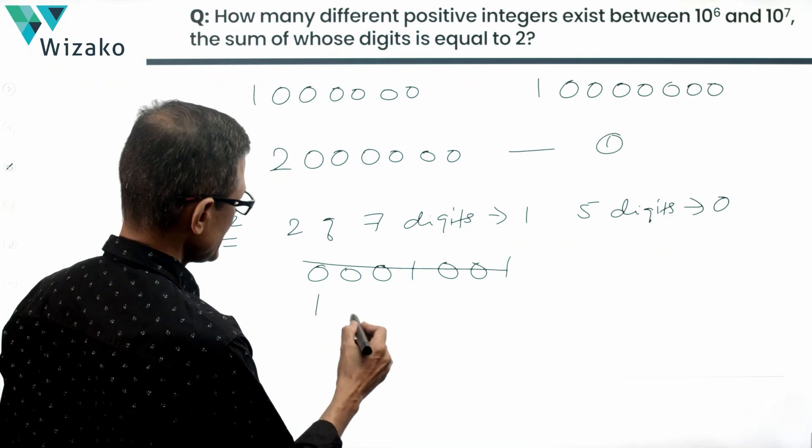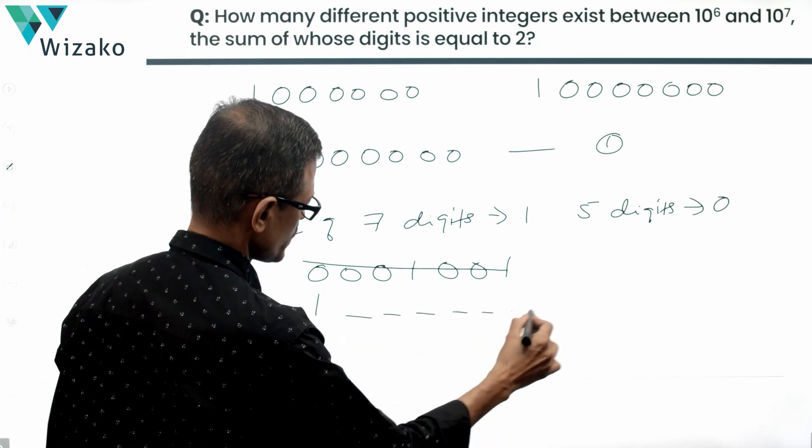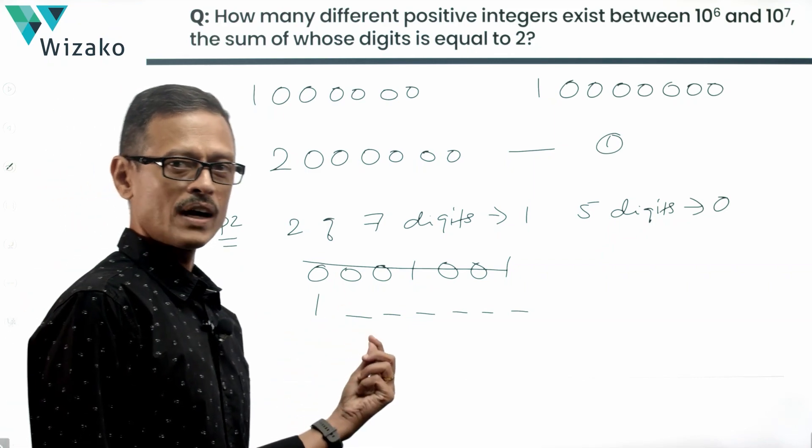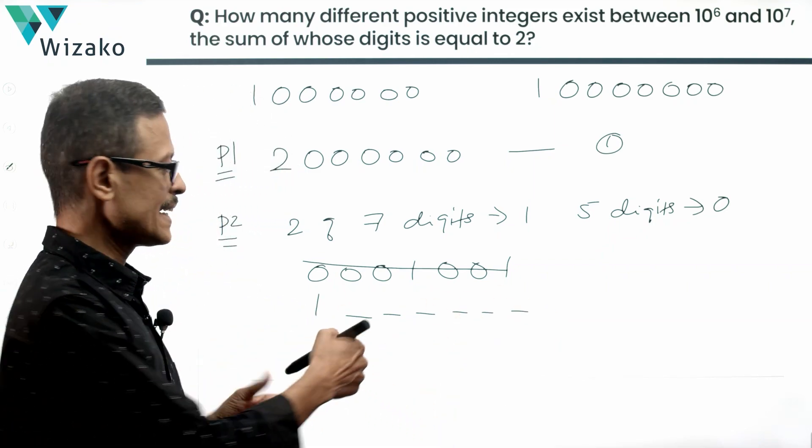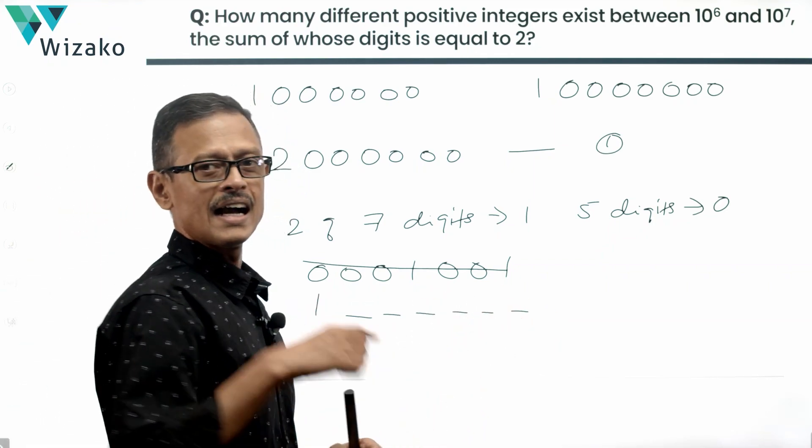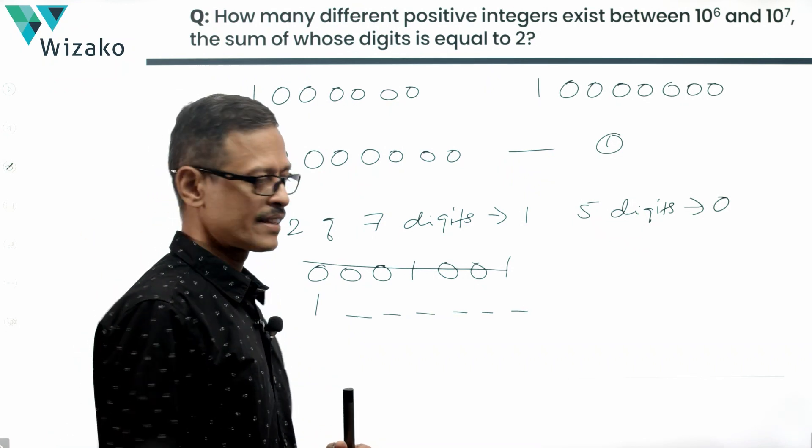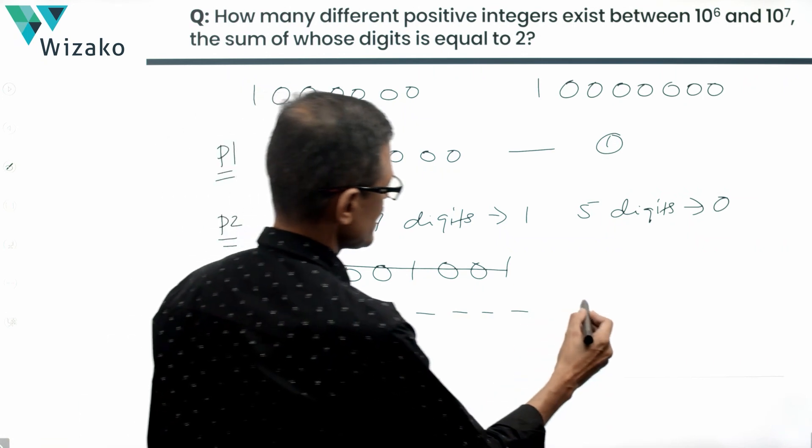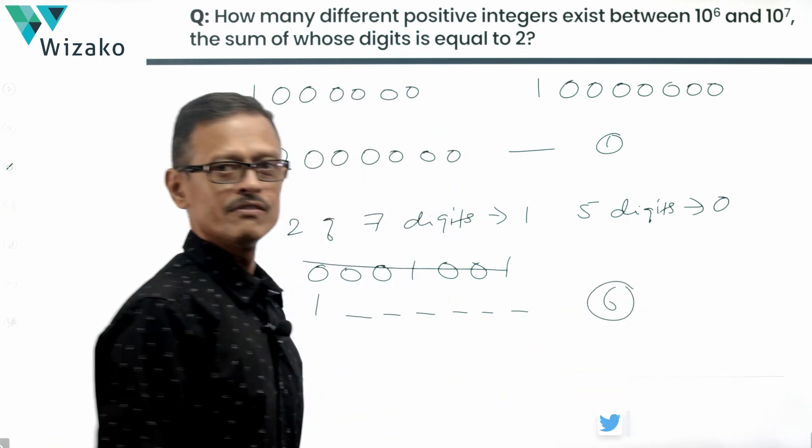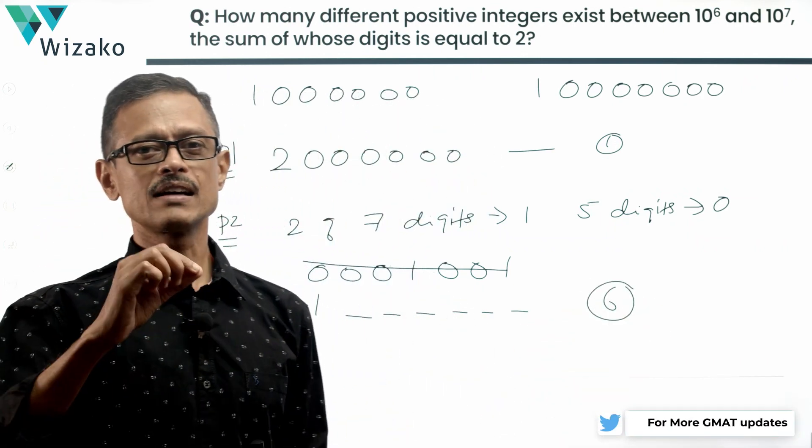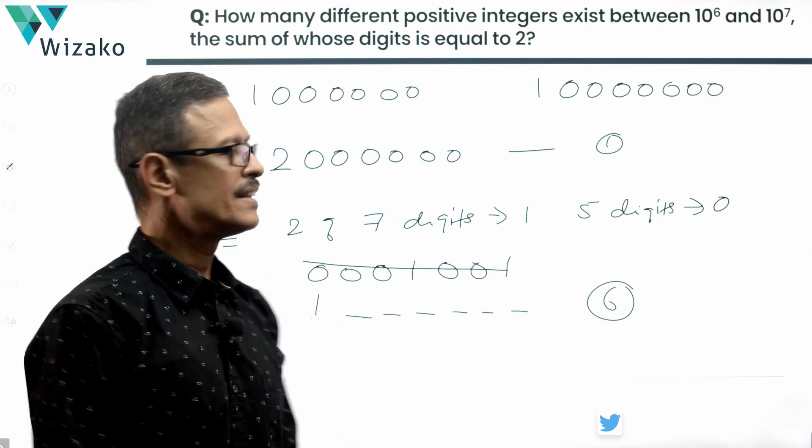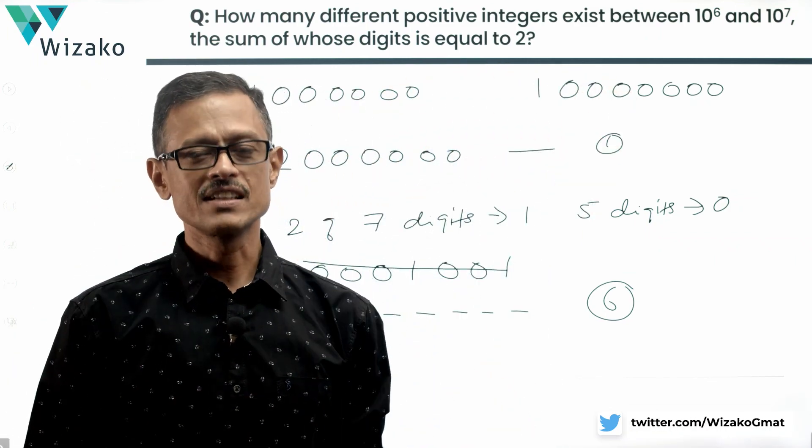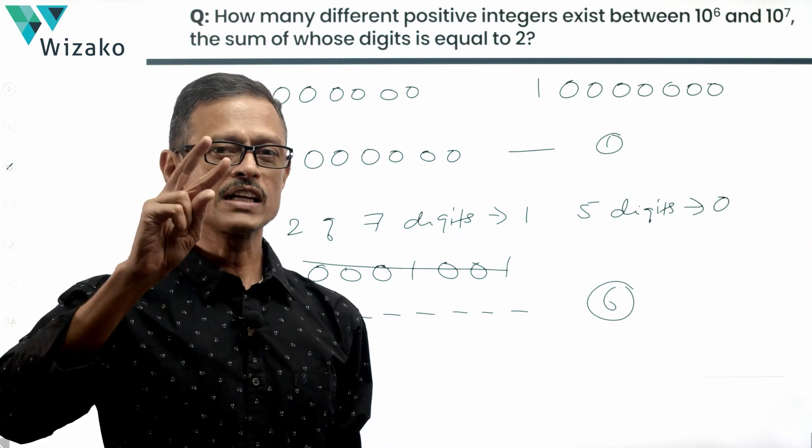The second 1 can take any one of these remaining 6 places. So it could be 1, 1 and 5 zeros. It can be 1, 0 and 1 and the remaining zeros. So 1 can take any one of these 6 places and the remaining 5 places can go to the 0s. So how many ways can we fill this 1? We can fill it in 6 ways. So we'll essentially have 6 such numbers, which are between 1 million and 10 million, which is 10 raised to the power of 6 and 10 raised to the power of 7, sum of whose digits is equal to 2, found by using two 1s.